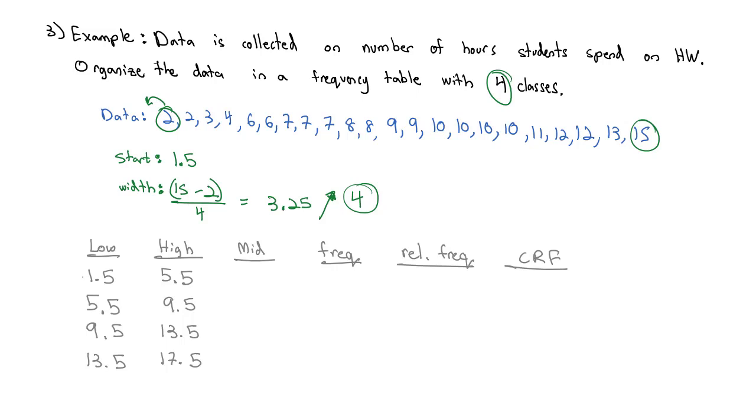Now for the midpoints, we said we just have to average consecutive lower limits. So we've got these two lower limits of 1.5 and 5.5. So I'll do 1.5 plus 5.5, divide that by 2. That's going to be 7 divided by 2, which is 3.5 for the first midpoint. Notice that's halfway in between my limits. Perfect. I can do this process over and over again for each class, but another nice thing is the width of the classes is also the width for the midpoint. So if I just keep adding 4, we get 7.5 plus 4 is 11.5 plus 4 is 15.5. And now we've got our midpoints all the way down.